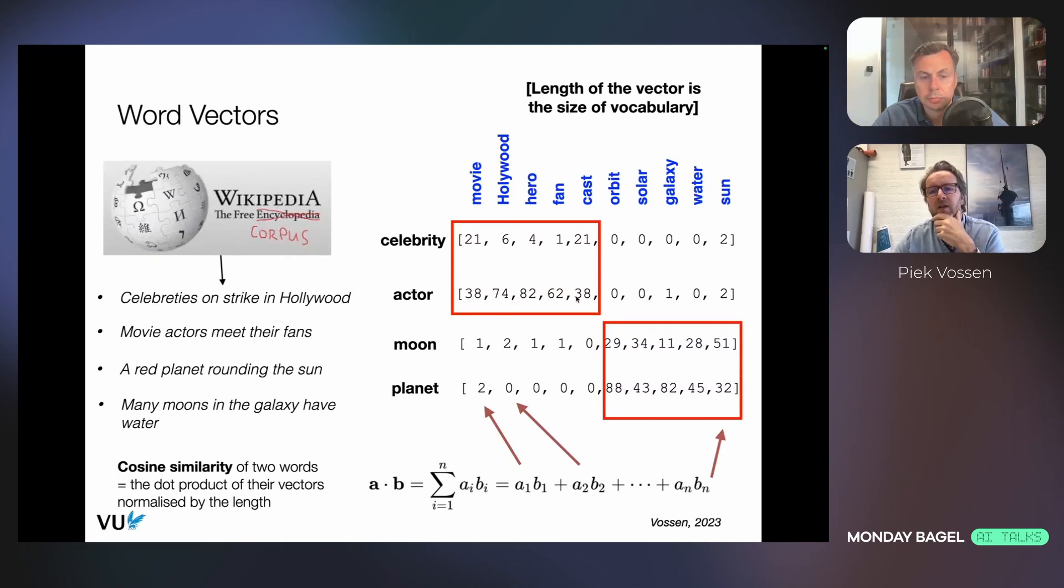We do the same for actor. We can see that celebrity never occurred with orbit or maybe twice with sun. By counting the context, you build up this kind of a profile in the vector representation that captures how we talk when we mention this particular word, celebrity. We can see that we talk in a very similar way about celebrities as we talk about actors, because these counts are very similar. If you look at moon and planet, we see a very different profile.